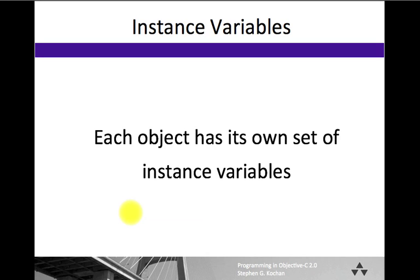One of the things that's key to object-oriented programming is the understanding that each object that you create has its own unique set of instance variables. And we'll be reinforcing that in the next program example where we show how to work with multiple objects.